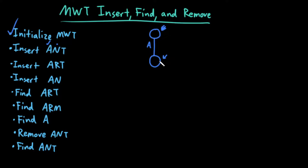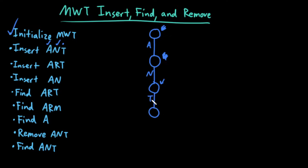Does my current node have a child edge labeled by the current letter? No, it doesn't. So I have to create one and then traverse down to it. Now my current letter is T. My current node is this one. Does my current node have a child edge labeled by T? No, it doesn't. So I have to create one and then traverse down to it. T is done — my word is all the way complete. I've exhausted every letter in my word. Therefore, whatever node I'm currently at must become a word node. So this becomes a word node. Now I'm done with this insertion.